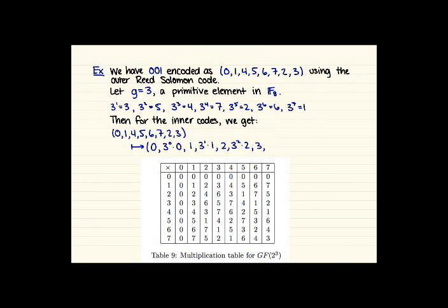And then 4, 3 squared times 4, and then 5, 3 to the 3 times 5, 6, 3 to the 4 times 6, 7, 3 to the 5 times 7, 2, 3 to the 6 times 2, and 3, 3 to the 7th times 3. So working out what these entries actually are, you can use those powers listed up here, and then using the multiplication table for the field with 8 elements to figure out what those actually are.